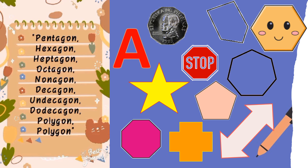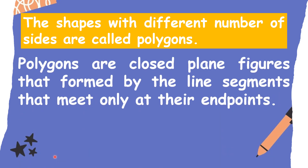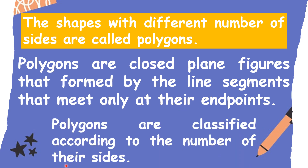Very good. That song is about polygons. The shapes with different numbers of sides are called polygons. Polygons are closed plane figures formed by line segments that meet only at their endpoints. Polygons are classified according to the number of their sides.